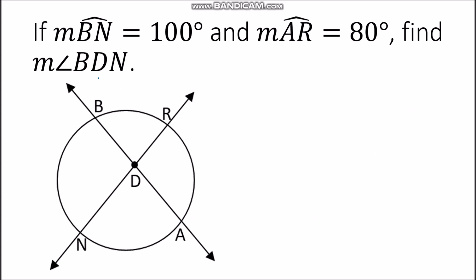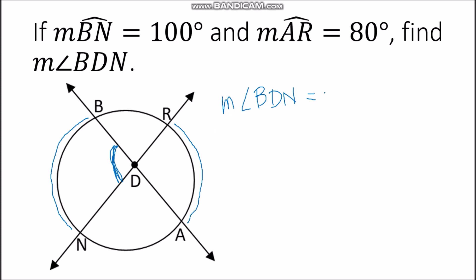Let's try an example. We have measurement of arc BD equal to 100 degrees, and measurement of arc AR equal to 80 degrees. Find the measurement of angle BDN. Since this angle is formed by two secants intersecting at an interior point, we get the measurement by taking half the sum of its intercepted arcs, which are arc BDN and arc AR.